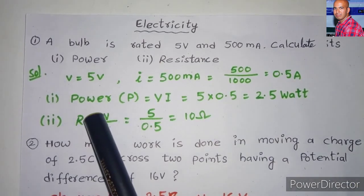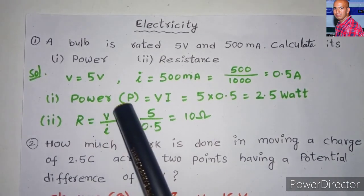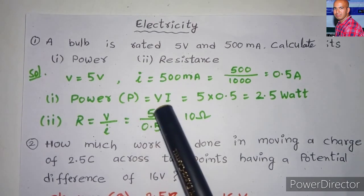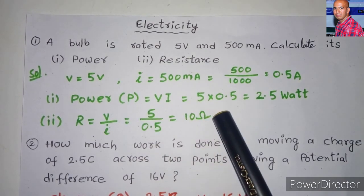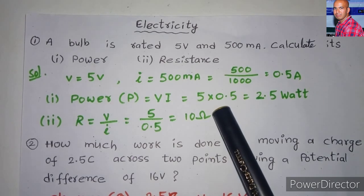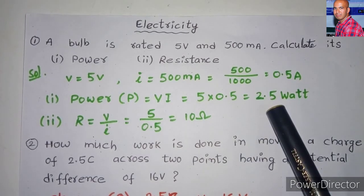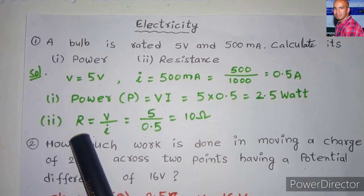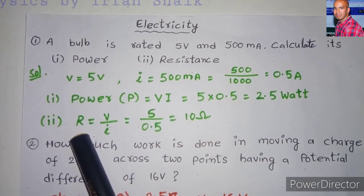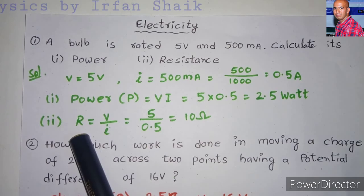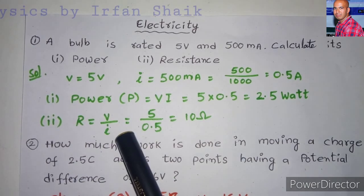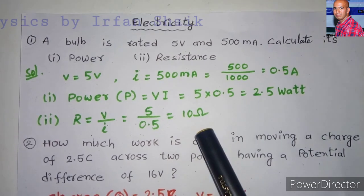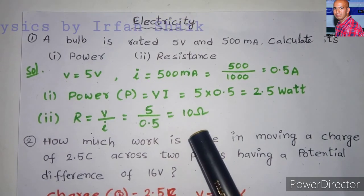Now first let us find out power. The formula we use here is P equals V times I. We know the values of V and I, so by multiplying we get the answer 2.5 watts. Next let us find out resistance. As per Ohm's law, R equals V divided by I. By substituting the values, we get the answer as 10 ohms.